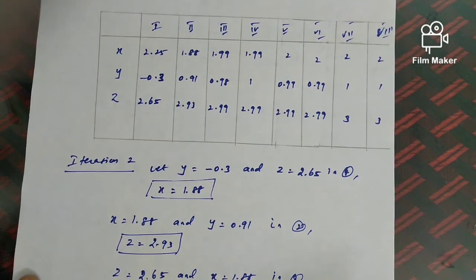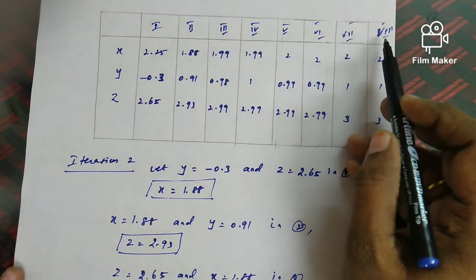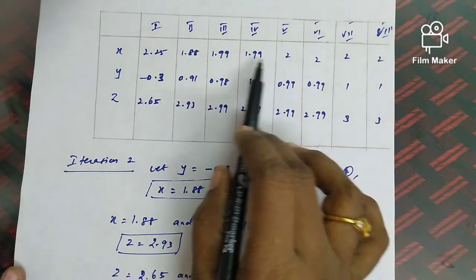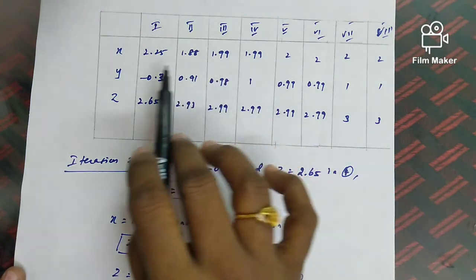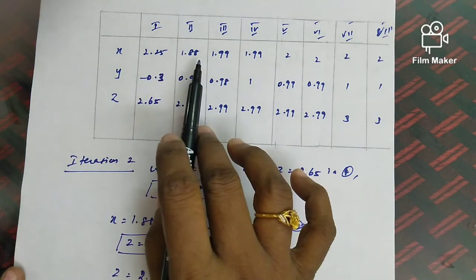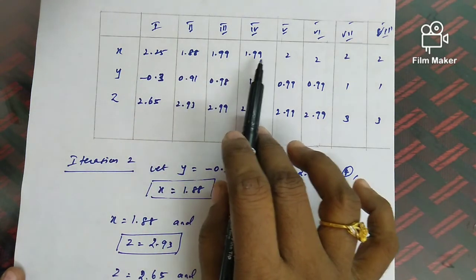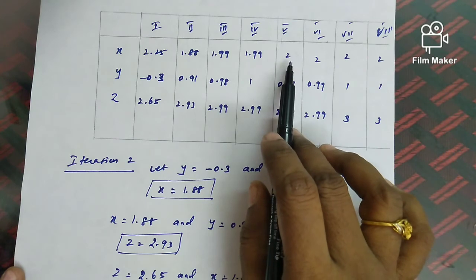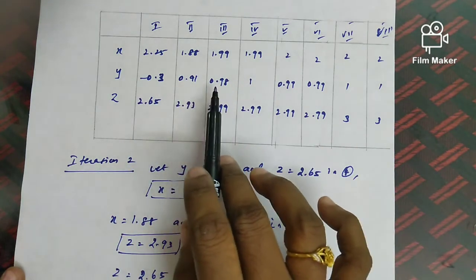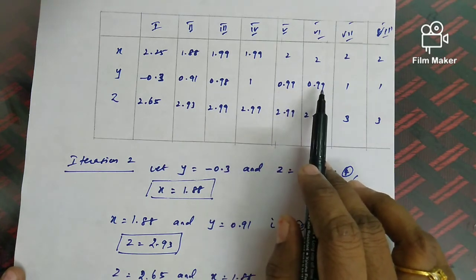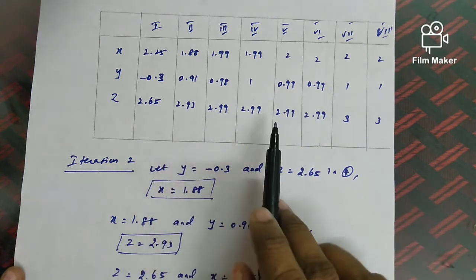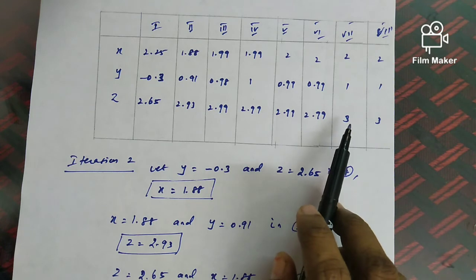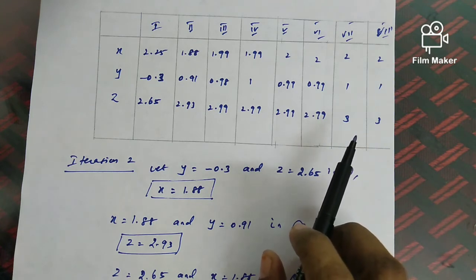In this problem, the iteration continues until the seventh and eighth iterations, where equal values are obtained. Around the fourth or fifth iteration, you can already guess the solution: the x values 2.25, 1.88, 1.99, 1.99 are converging to 2. Similarly, the y values converge to 1, and the z values (2.99, 2.99, 2.99) converge to 3. So the solution is x equals 2, y equals 1, z equals 3.